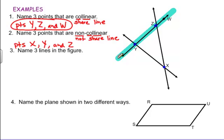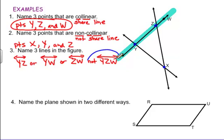And the last part is name three lines in the figure. Don't forget when you want to name lines, you use two capital letters. If I'm going to use two capital letters, then let's start with our blue line. Hey, wait a minute. Our blue line has three letters. I only use two letters to name a line. So I could name this line YZ, or I could name that line YW, or I could name that line ZW. But I cannot name that line YZW. I cannot do this. So make sure you don't name a line with three letters. It's not done in geometry.